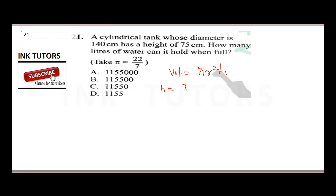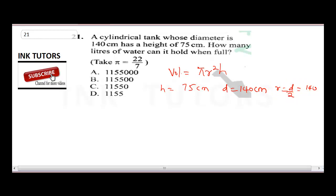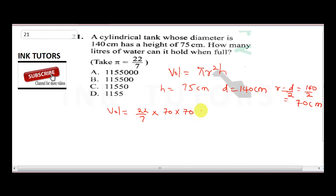The formula for calculating volume of a cylinder is V = π r² h. We've been given height as 75 cm and diameter as 140 cm. We need the radius: radius = diameter divided by 2 = 140 divided by 2 = 70 cm. Now we are good to go. Our volume is 22 over 7 times 70 times 70 times 75.